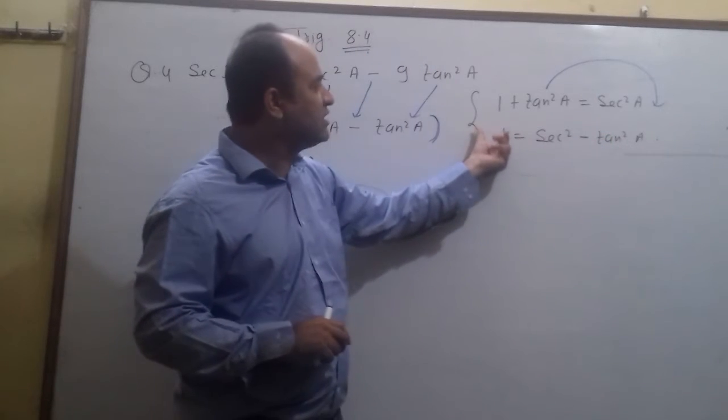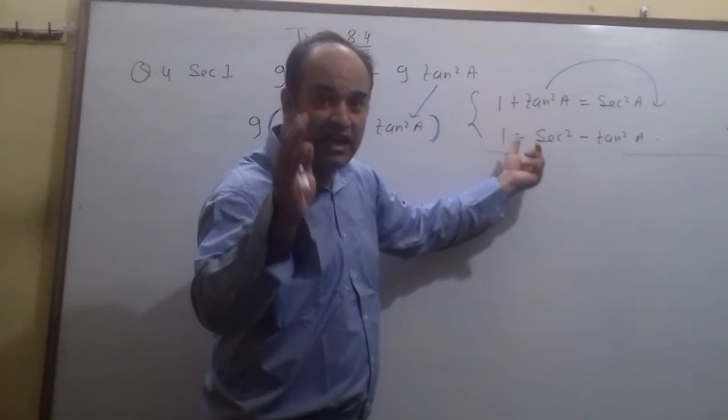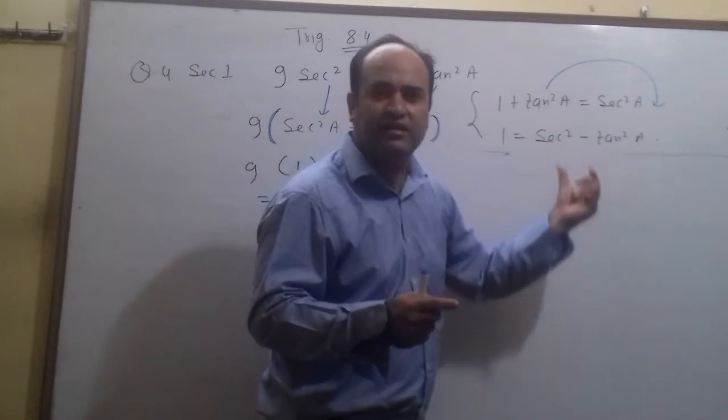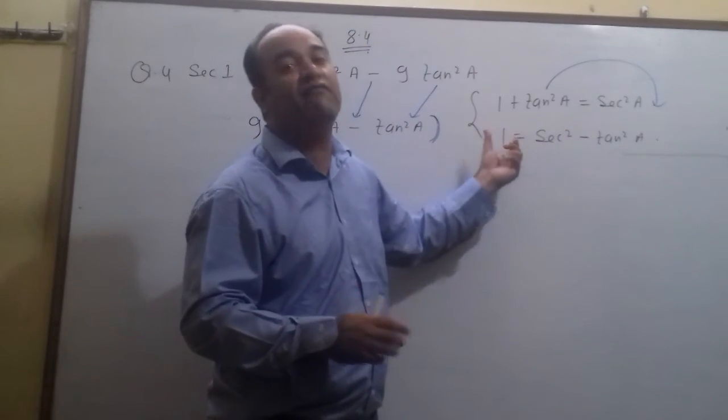sec²a minus tan²a and its value is equal to 1. What is the meaning of this? What does it mean? If you have got sec²a minus tan²a, you can write 1.